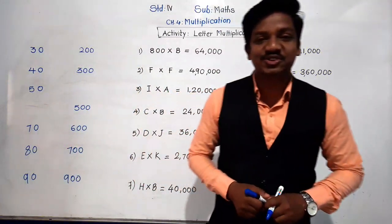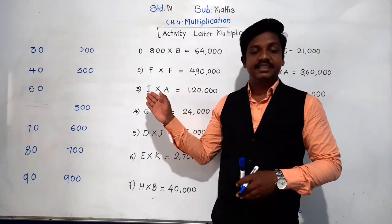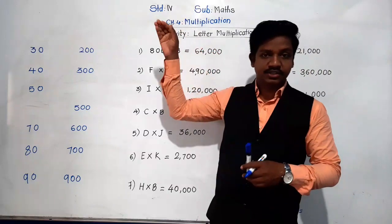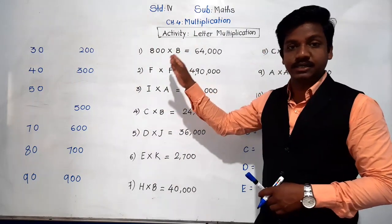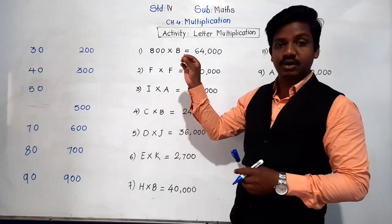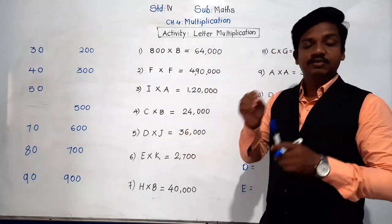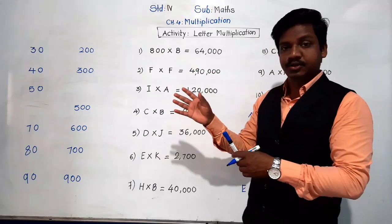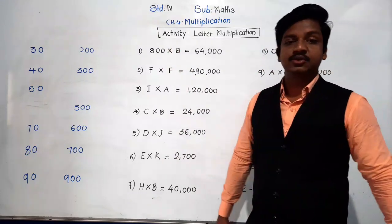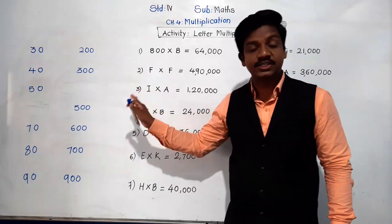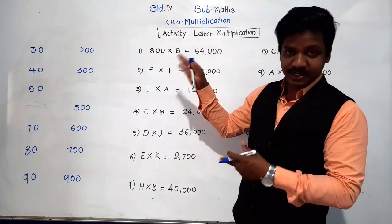Good morning, dear students. Welcome to today's video lecture of maths. Today we are going to learn one activity which is based on multiplication by ten, hundred, and one thousand — the concept we learned in chapter four, multiplication. This activity is based on that concept: multiplying by ten, hundred, one thousand, or ten thousand — that is, when there are zeros at the end of numbers, how to multiply them. This activity is very interesting and requires us to use our ideas.